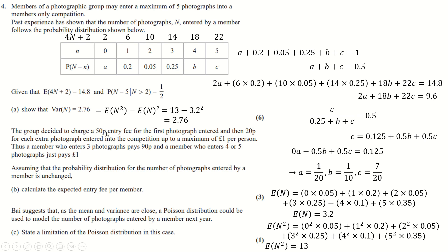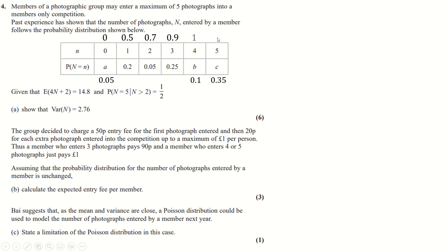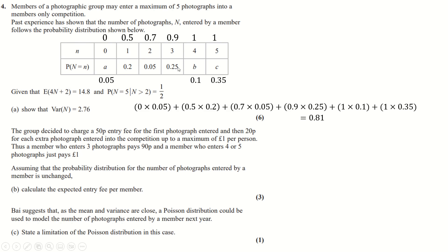The entry fee structure is: 0p for no photos, 50p for 1, 70p for 2, 90p for 3, and £1 (100p) for 4 or 5. The expected entry fee is then the sum of each fee multiplied by its corresponding probability, giving the answer in pence.